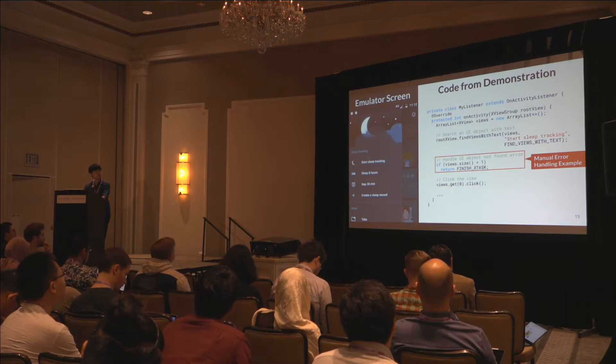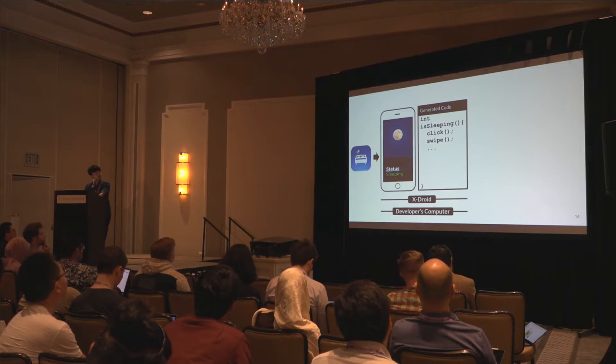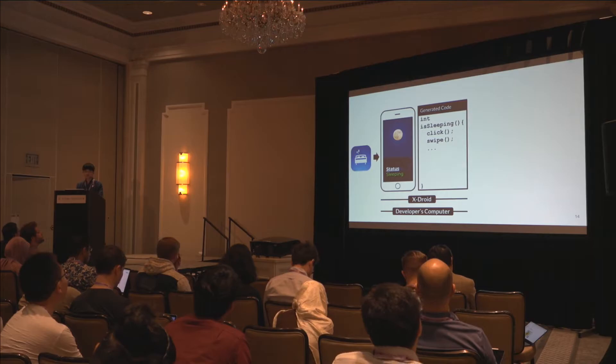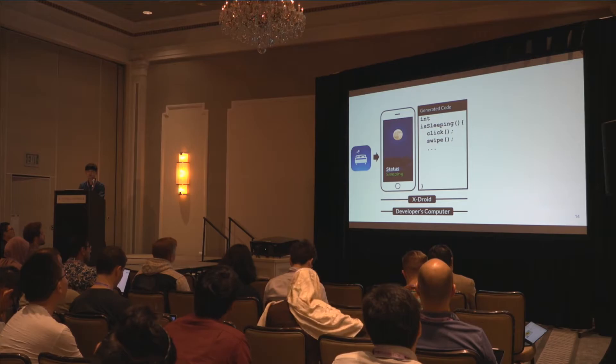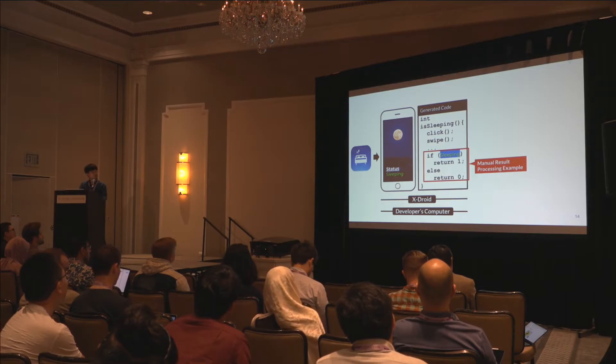Getting back to the example: after obtaining that generated code, you can further customize it to retrieve results. For example, you can check whether a particular string on the screen says 'sleeping' and return true, or 'awake' and return false. By doing that, you obtain a Java method which infers whether the user is sleeping or not.